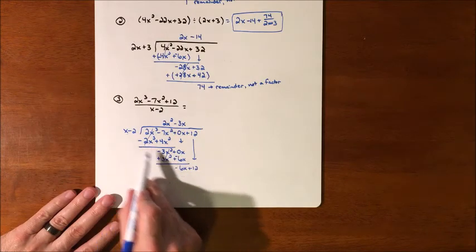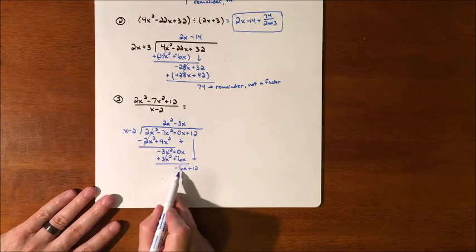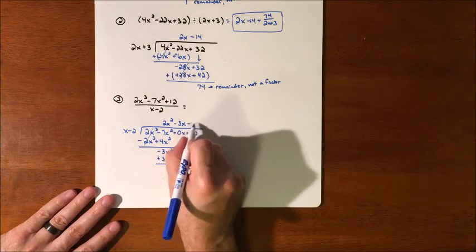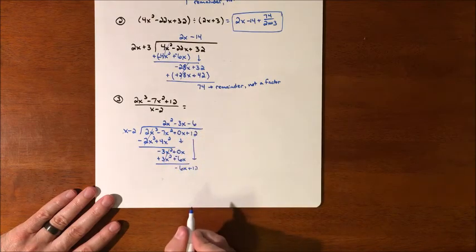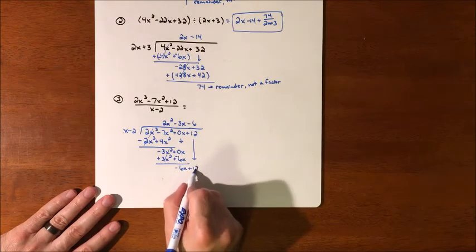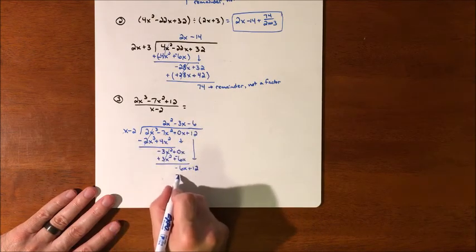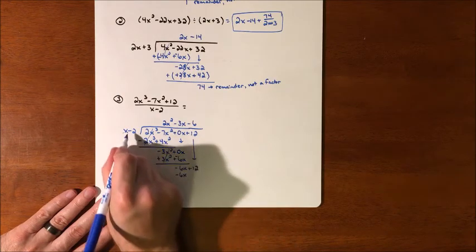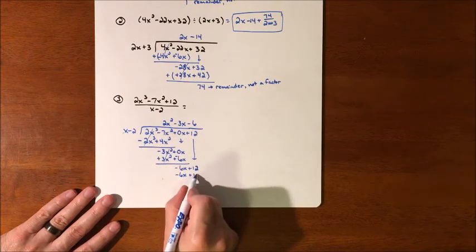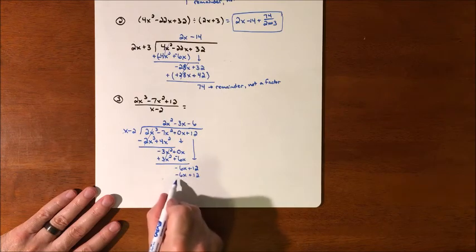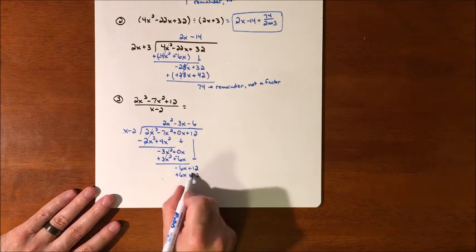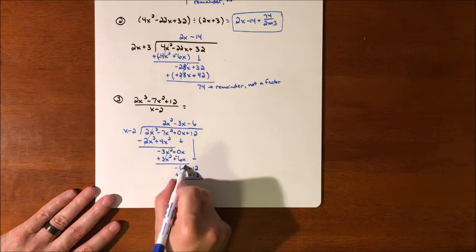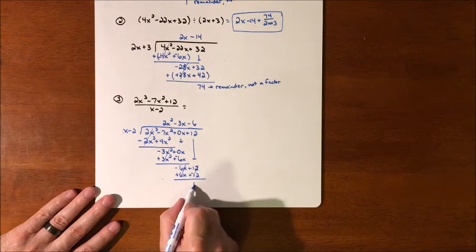What are we going to multiply the x by to make it become a negative 6x? Just a negative 6. So if we multiply that, that's going to be a negative 6x plus 12. And we're going to subtract this, so that's going to change their signs. Those cancel, those cancel, we get a 0.